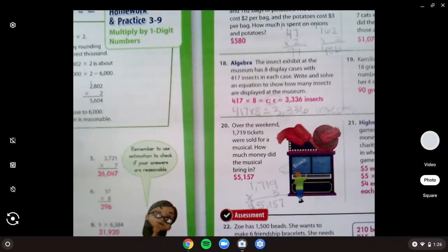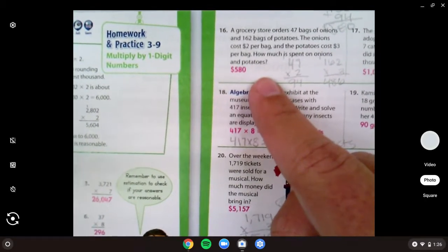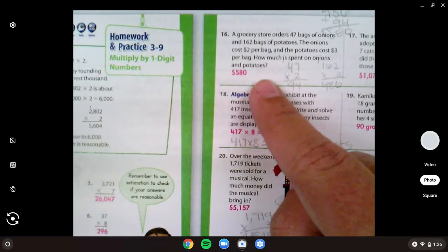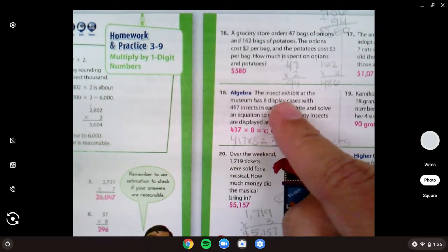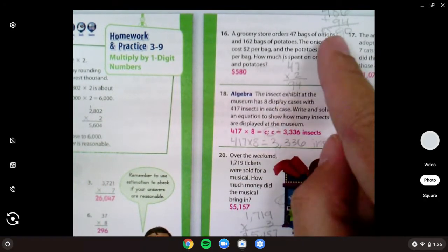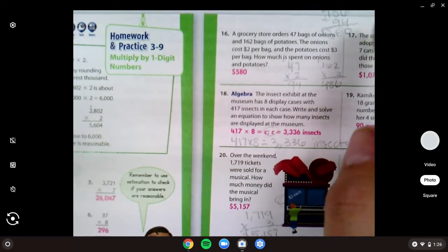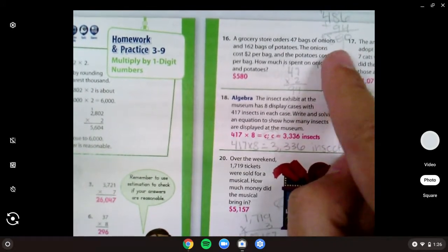Over here on the right side, number 16 wanted you to do quite a few steps. You needed to find out how much the onions cost, which was $94. Then how much the potatoes cost, which was $580, or 486, and add them together to get $580.